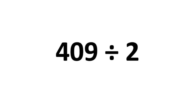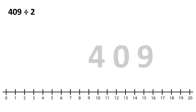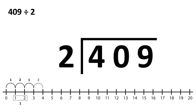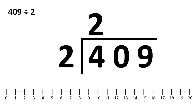Now let's look at a slightly bigger number: 409 divided by 2. How many 2s go into 4? Two lots of 2 exactly. Now, how many 2s go into 0? None.